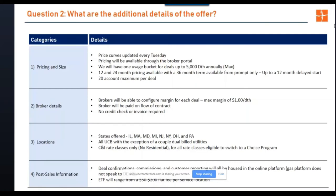All the pricing as Rick mentioned is available through the broker portal — there's an export button. Every Wednesday morning you could export the prices and they'd be available for you, giving you the whole week from Wednesday until Tuesday evening around 5 PM. We would only do an ad hoc run if some kind of significant market movement happened, and we would definitely send notifications. As mentioned, there's only one bucket — 5,000 decatherms annually. 12 and 24-month terms are available.